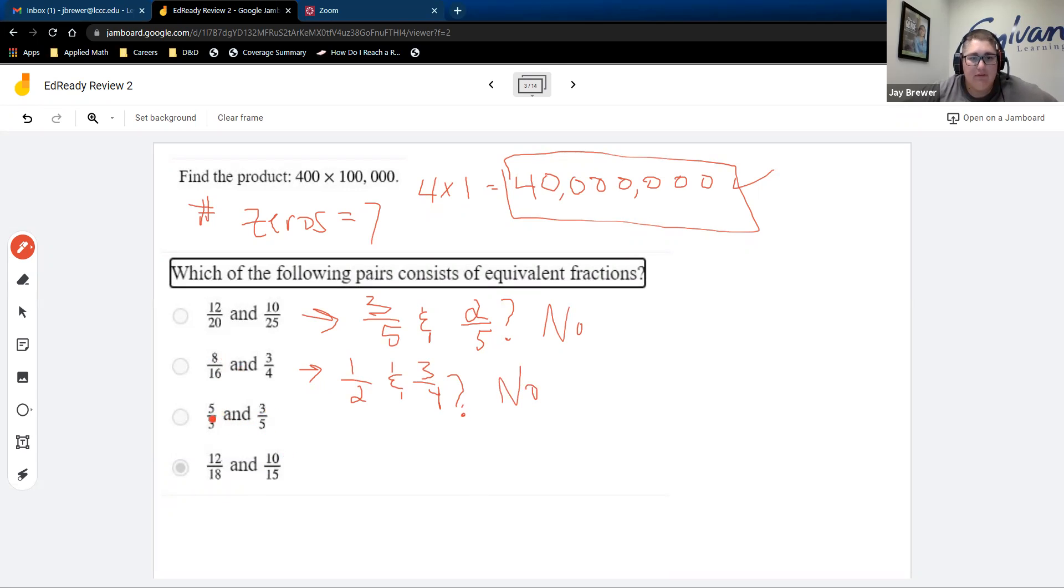5 thirds and 3 fifths, even though 5 thirds is an improper fraction, it's in lowest terms. So again, this one is a no. So to verify that this is the correct answer, 12 and 18 both share a 6, so that'll be 2 thirds. And 10 fifteenths, they both share a 5. So again, 2 thirds. So this is our yes.